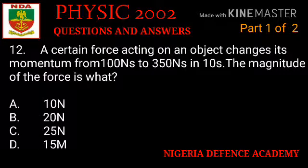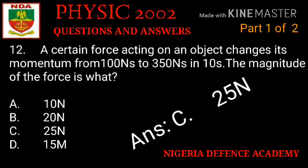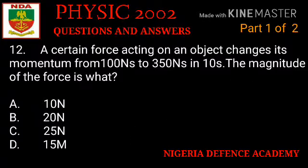Question number twelve: a certain force acting on an object changes its momentum from 100 N·s to 350 N·s in 10 seconds. The magnitude of the force is what? Option A: 10 N. Option B: 20 N. Option C: 25 N. Option D: 15 N. Option C is the answer.